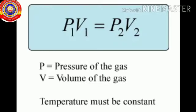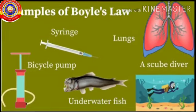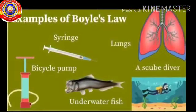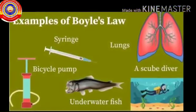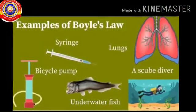Mathematically we can express the equation as P₁V₁ = P₂V₂, where P is the pressure, V is the volume, and temperature is a constant. Now let's look at some examples and applications of Boyle's law.